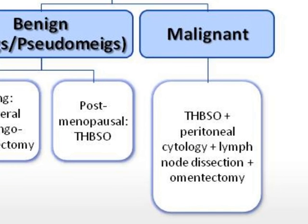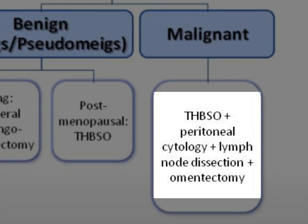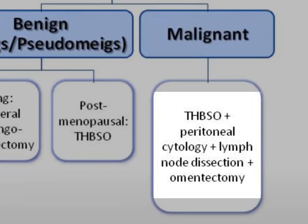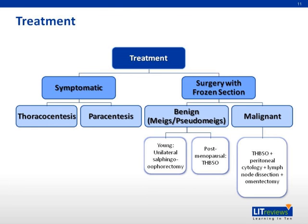If frozen section shows a malignant tumor, surgical staging and total hysterectomy with bilateral salpingo-oophorectomy together with peritoneal cytology, lymph node dissection, and omentectomy is done. In Meigs' syndrome, the ascites and pleural effusion resolve with tumor resection.